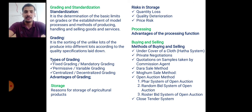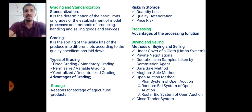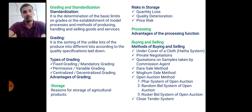Types of grading include: fixed grading and mandatory grading; permissive grading; variable grading; and centralized or decentralized grading. Grading provides advantages to both producers and consumers — producers will get a good price for their good quality products, and consumers will get good quality products according to different grades.